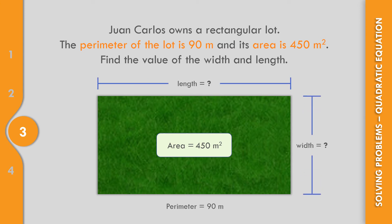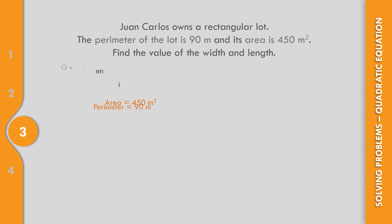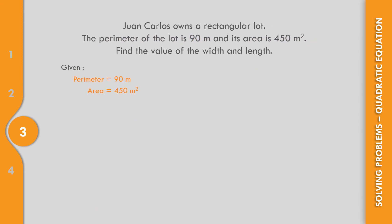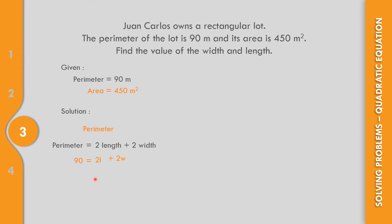Let us solve. The formula for perimeter is 2L plus 2W. So 90 equals 2L plus 2W. Dividing both sides by 2, that becomes 45 equals L plus W. For the area, the formula is length times width, so 450 equals L times W.